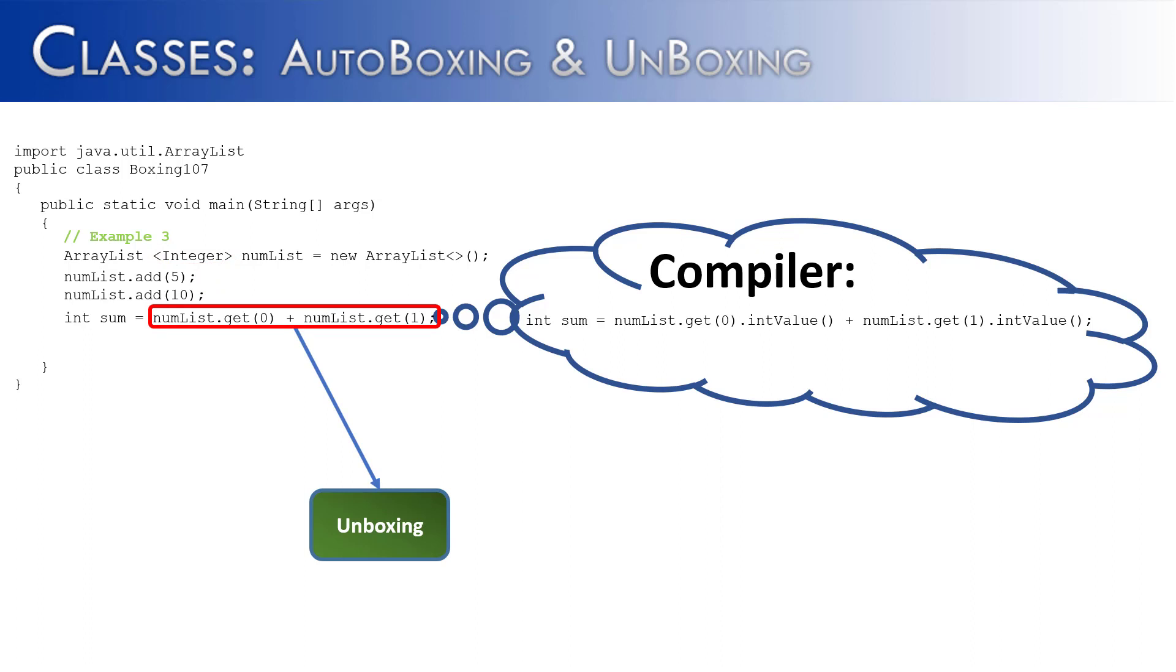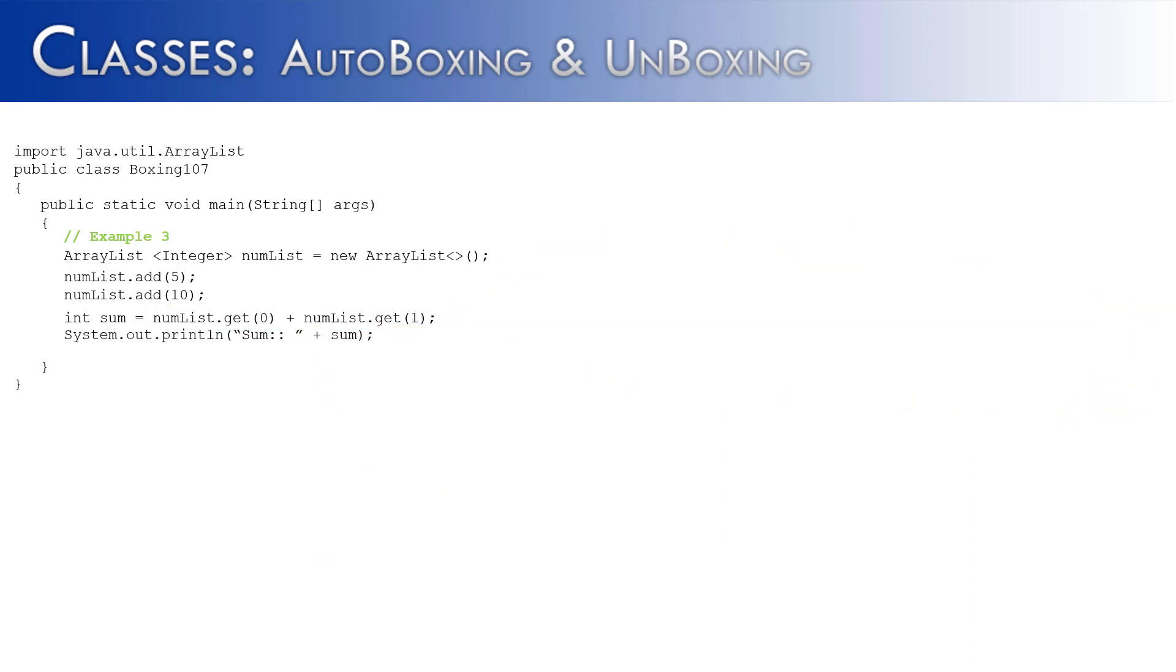And hopefully, you can see how great unboxing is. So we don't even have to think about the conversion between a primitive and an object. It just happens behind the scenes and we don't have to make those calls every single time we use an ArrayList or every time we need to make a conversion between a primitive and an object. So then we want to print out the sum and we would get 15 just as we would expect.